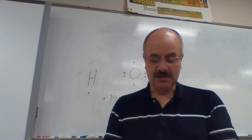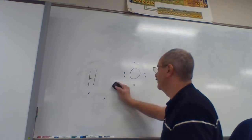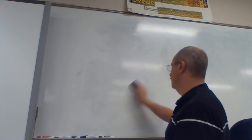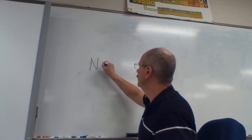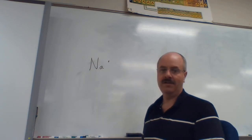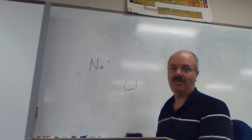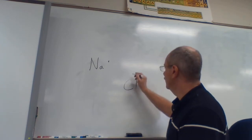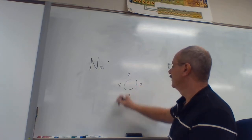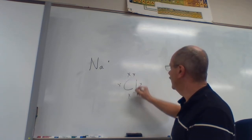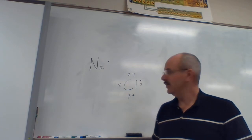Let's diagram sodium chloride and what actually happens. So I have sodium — he's in the very first group, so this sodium has one valence electron. Chlorine is in the group that's got seven, so he has seven valence electrons. I'll put his as X's: one, two, three, four, five, six, seven.